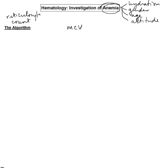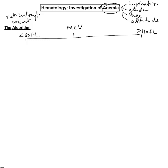This works very well because the mean cell volume is highly conserved across a person's life. It is divided into less than 80 femtoliters, which is microcytic; greater than 110 femtoliters, which is macrocytic; and then between 80 to 100, which is normocytic.